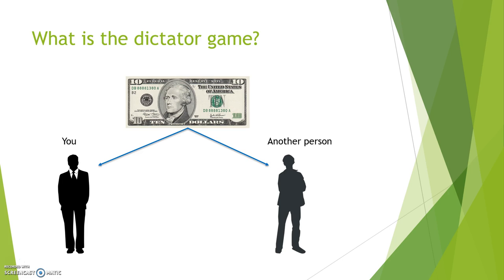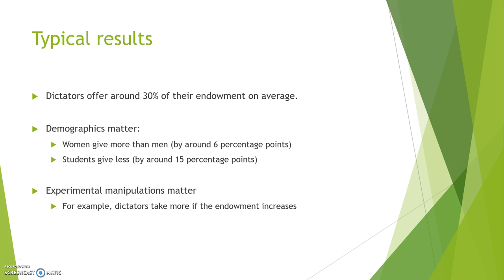If people were purely driven by self-interest, they would allocate the entire amount to themselves. However, this is not what we often observe. Summarizing over many experiments, we find that dictators offer around 30% of their endowment on average.